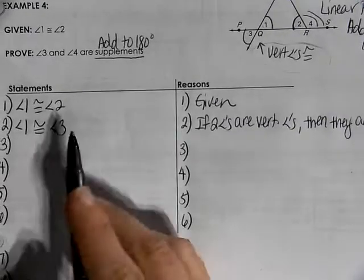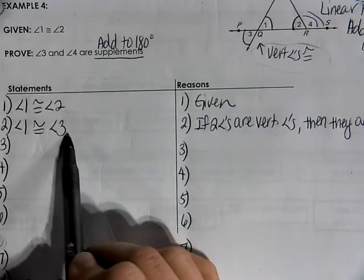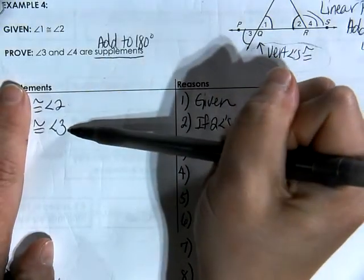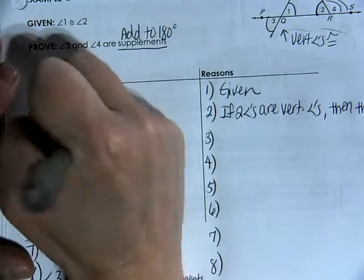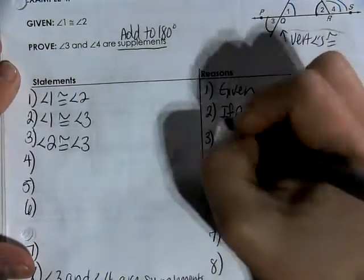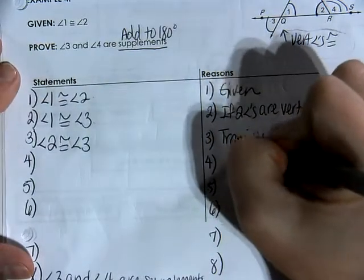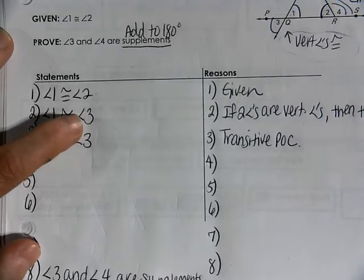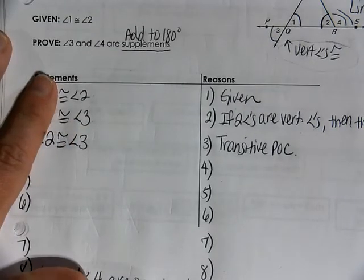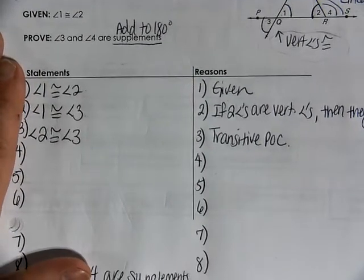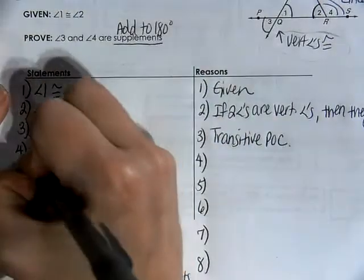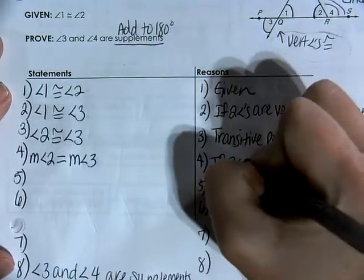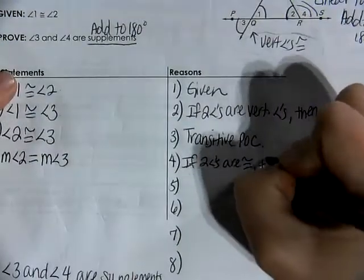Next, I can see that angle one is congruent to angle two and angle one is congruent to angle three. So if I eliminate their connection, I can say that angle two has to be congruent to angle three — by the transitive property of congruence. If they are congruent, then I can say they are equal in measure, so the measure of angle two has to equal the measure of angle three. That is: if two angles are congruent, then they are equal in measure.